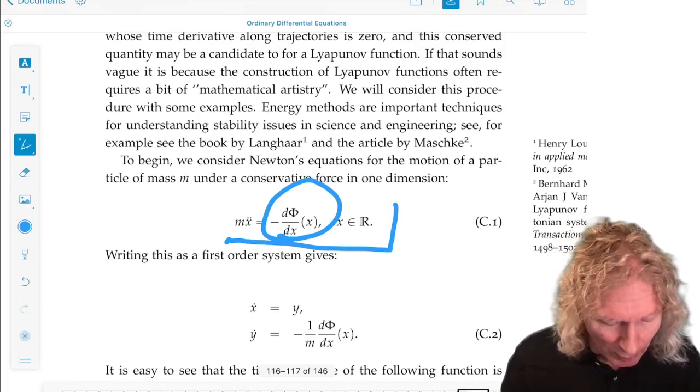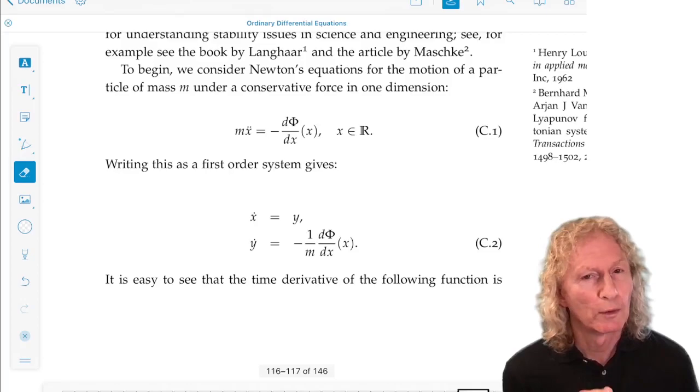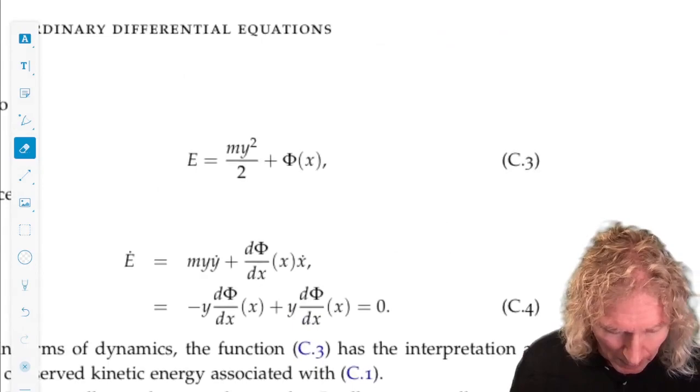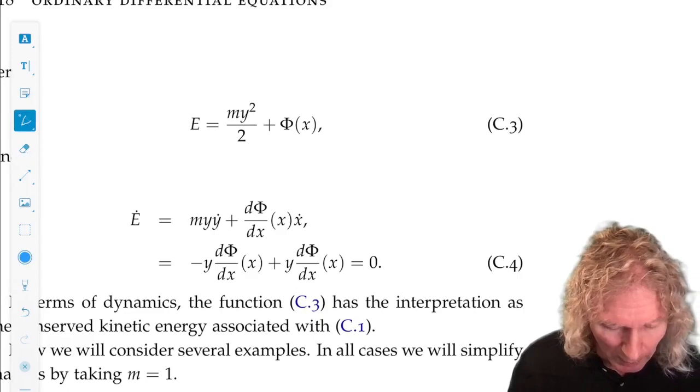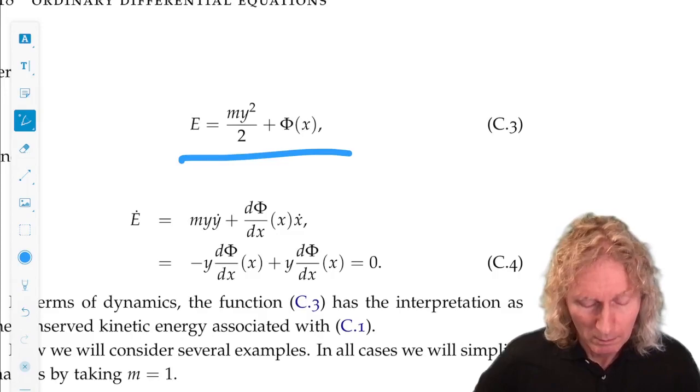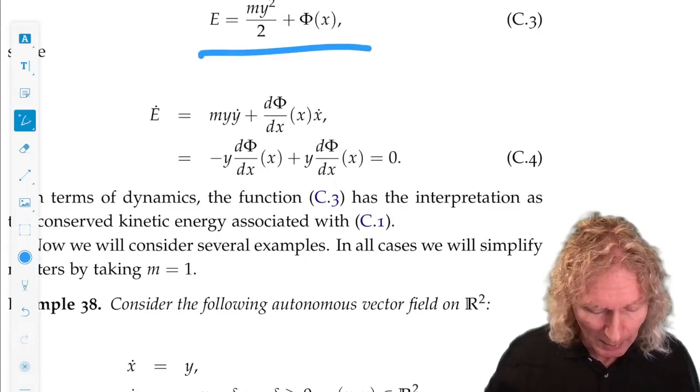Okay, so let's write that as a first-order system, and that's what we have below. All right, now the point is energy is conserved for this system, and the energy function has this form. And so what that means, energy being conserved, is that the time derivative of this function E is zero. Now time derivative means derivative along trajectories. Along a trajectory, this function does not change in time. And it's a simple calculation to show that.